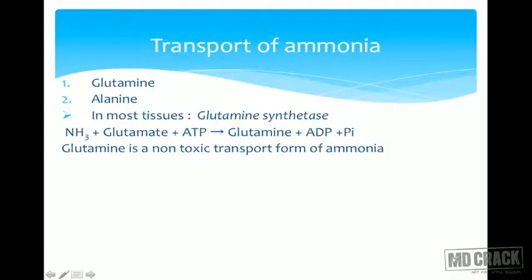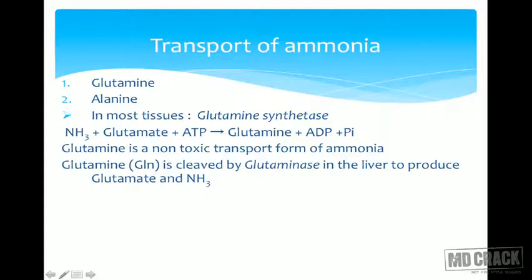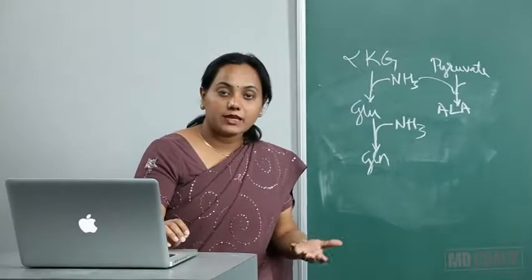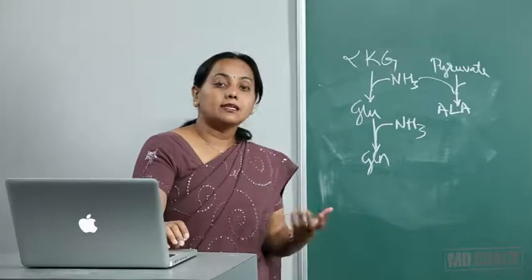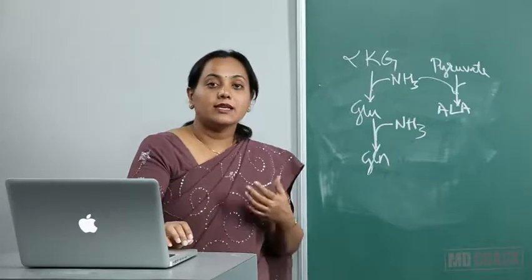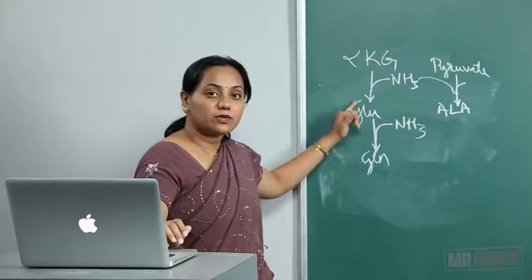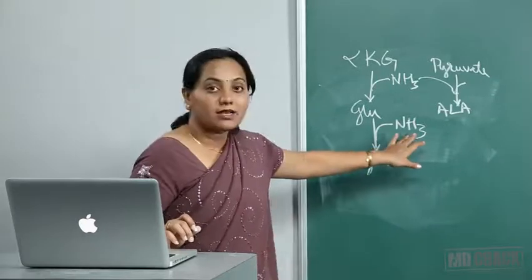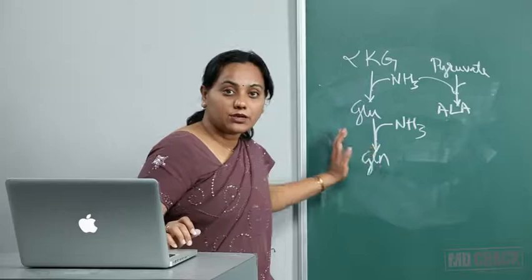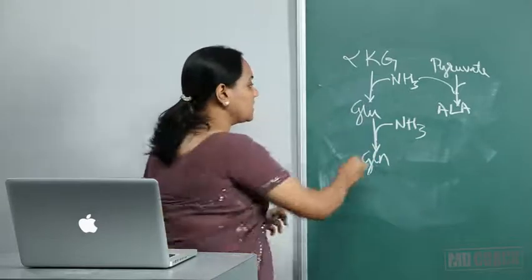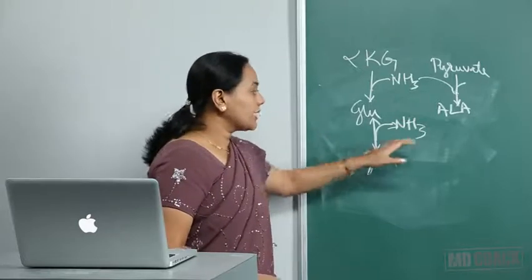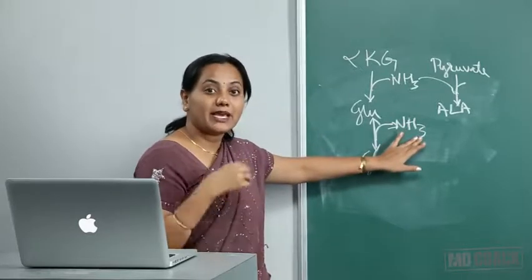Glutamine is the non-toxic transport form of ammonia. When glutamine arrives at the liver, it must release ammonia. The enzyme that converts glutamine back to glutamate — releasing ammonia — is called glutaminase. Glutaminase is present in the liver, where ammonia needs to be detoxified. It is also present in the kidney tubules.